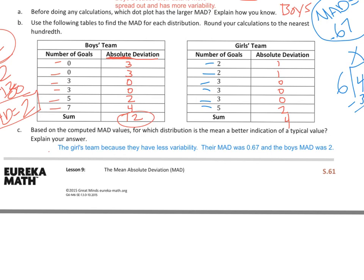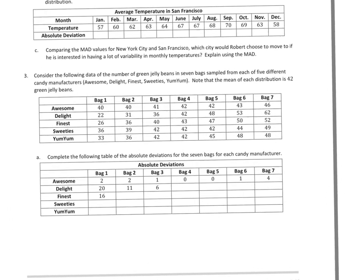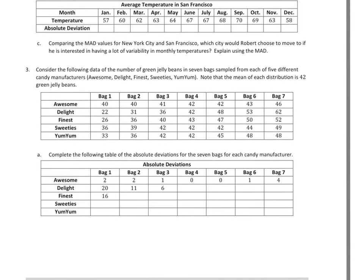Now, we're going to go on to the next. So, here is page 2, and we're going to look at question 3. I'm going to skip 2 right now. So, 3 says, consider the following data on the number of green jelly beans in 7 bags sampled from each of 5 different candy manufacturers. And, we have the name of them right here. Note that the mean of each distribution is 42 green jelly beans.